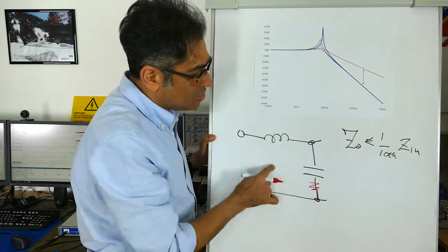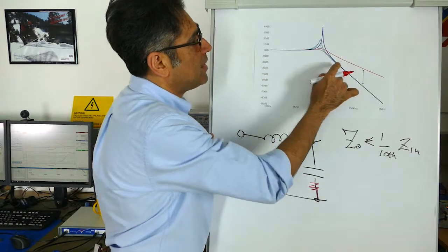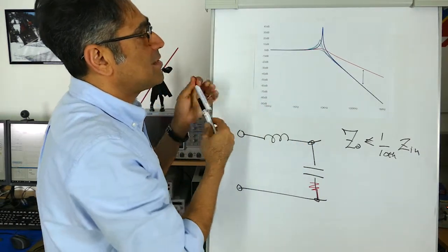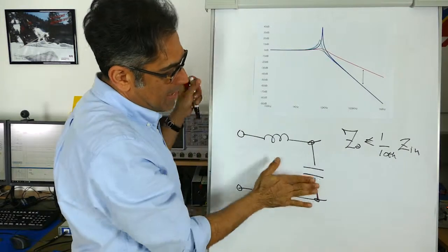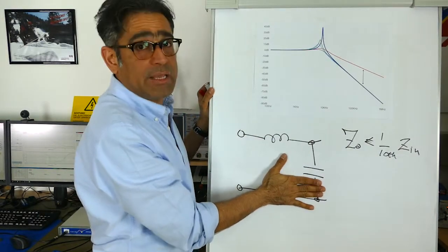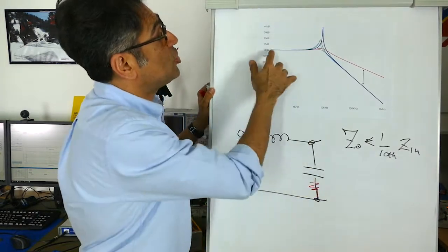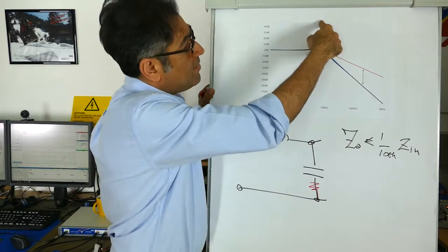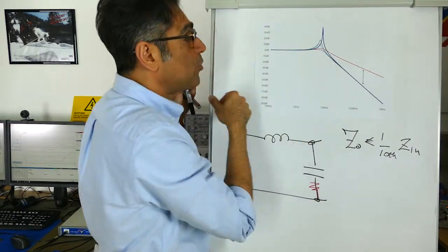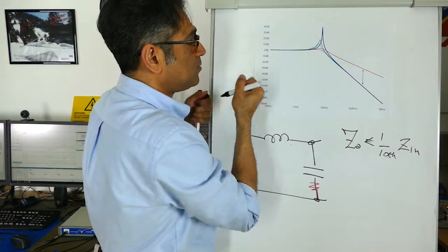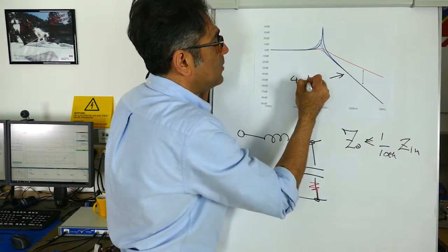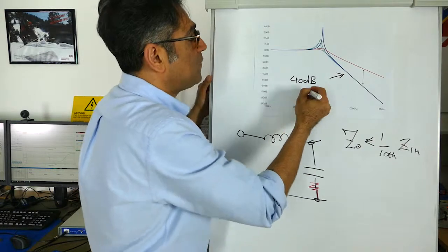I have shown this structure with the red trace here. So first if you look at the blue trace that is the LC filter without any damping at all. You can see that the Q is very high and then it rolls off at a rate of 40 dB per decade and that is because it's a double pole filter.